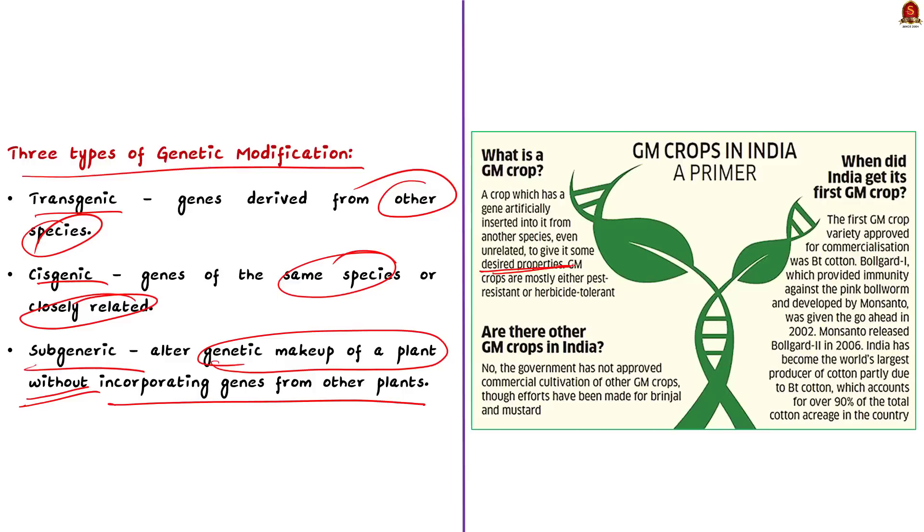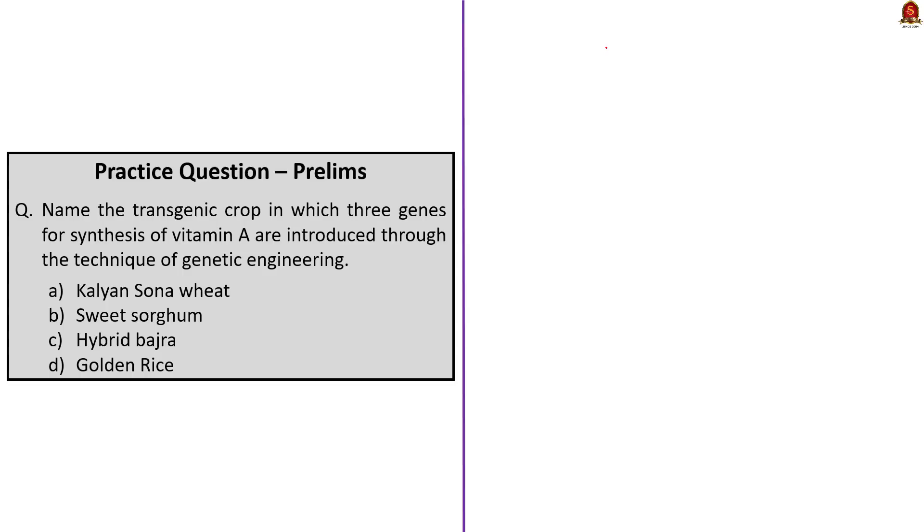See, BT cotton is the only genetically modified crop allowed in India. It has been genetically modified to produce an insecticide, which will combat the cotton bollworm, which is a common pest. The genetic engineering appraisal committee, which is under the Ministry of Environment, Forest and Climate Change, is responsible for the assessment of proposals related to the release of genetically engineered organisms and products into the environment, including experimental field trials. So, this is all that I wanted to discuss regarding this news article. With this, now we will move on to the next part of the discussion, which is practice questions.